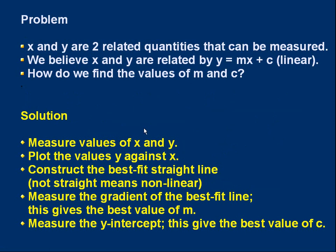This leads us to a general technique. The problem is this. If x and y are two related quantities that can be measured, and they were length and tension in the previous example, we believe x and y are related by this formula. However, sometimes we'll believe that, not always. It may not always be an appropriate relationship. But we believe there's a linear relationship between x and y. If that's true, how do we find the values of m and c by measuring x and y?